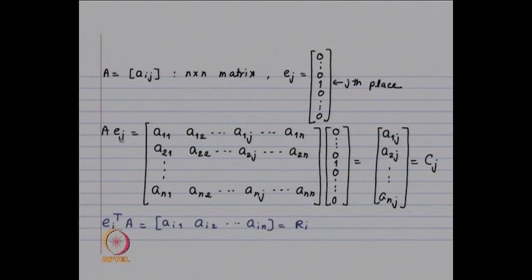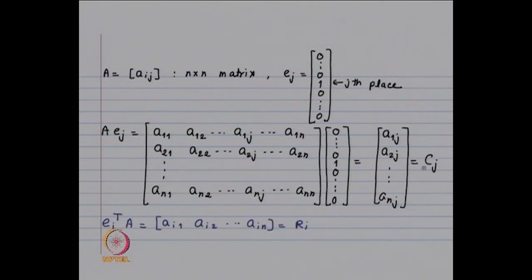Some notation: A is our n×n matrix, e_j is going to be the canonical vector with 1 at the j-th place and 0 elsewhere. When you look at A times e_j, that gives us the j-th column of A. Similarly, one can show that e_i^T A gives us the i-th row: a_{i1}, a_{i2}, ..., a_{in}.